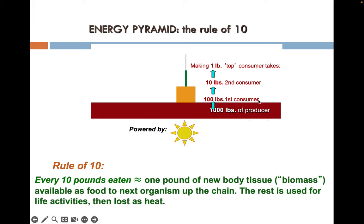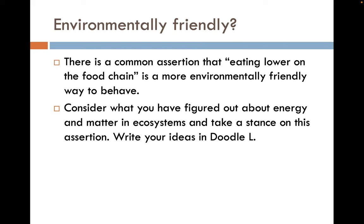And of course, all of this is powered by the sun — solar energy. There's a common assertion that eating lower on the food chain is a more environmentally friendly way to behave. Consider what you've learned about energy pyramids and ecosystems and take a stance on this assertion.